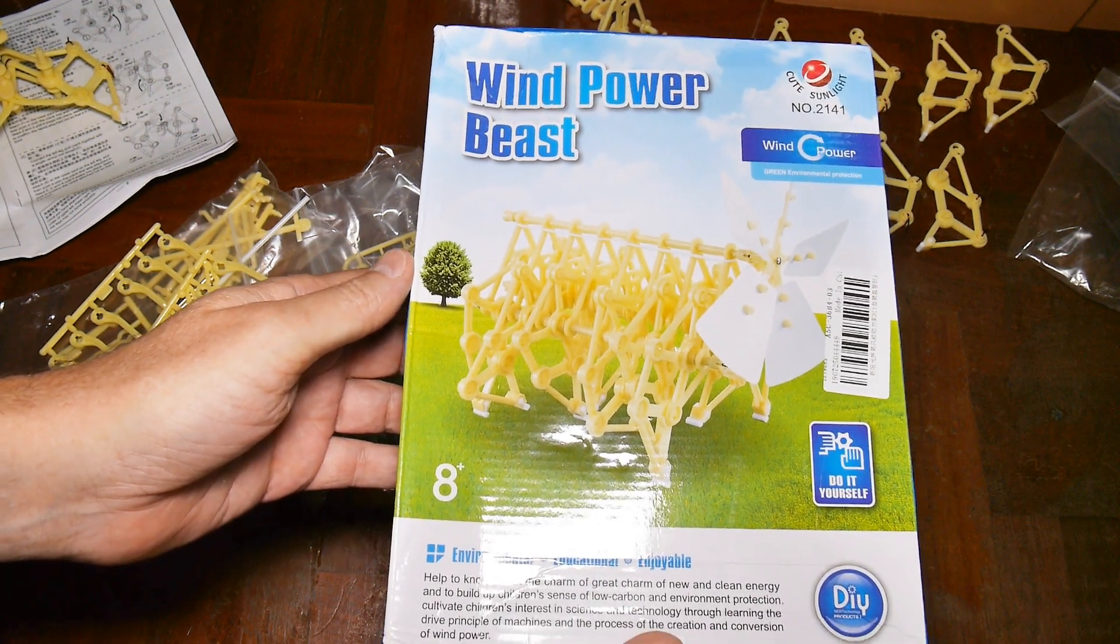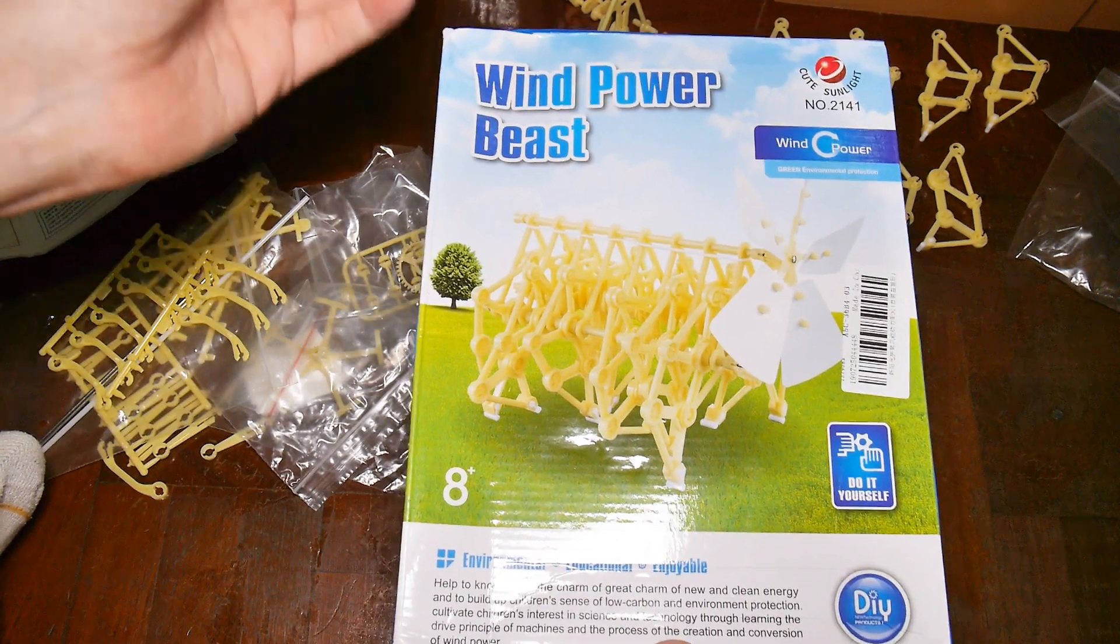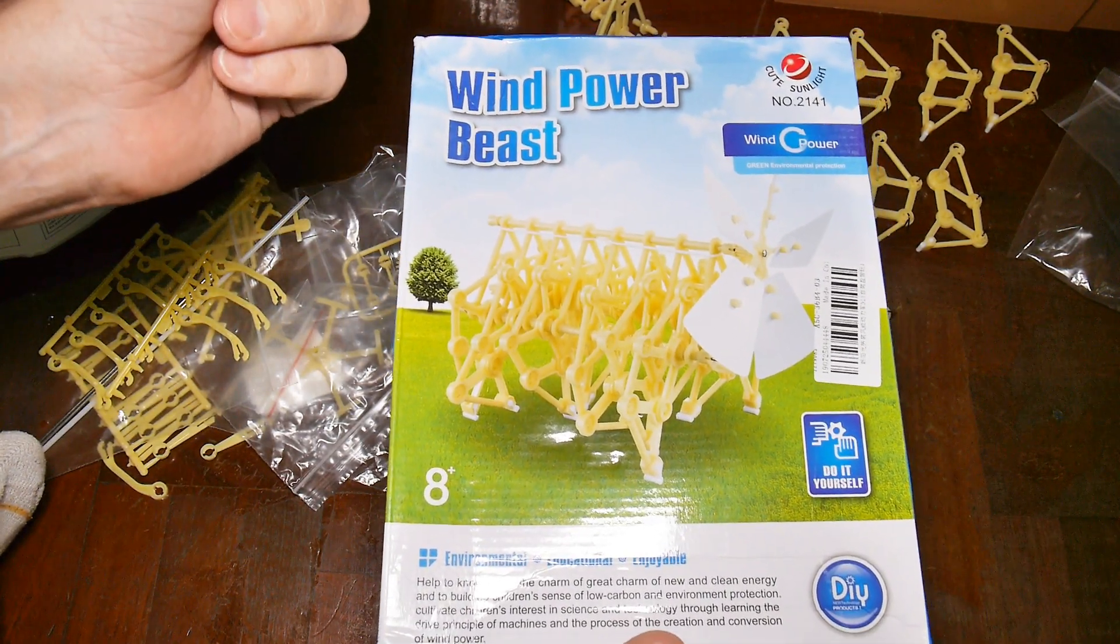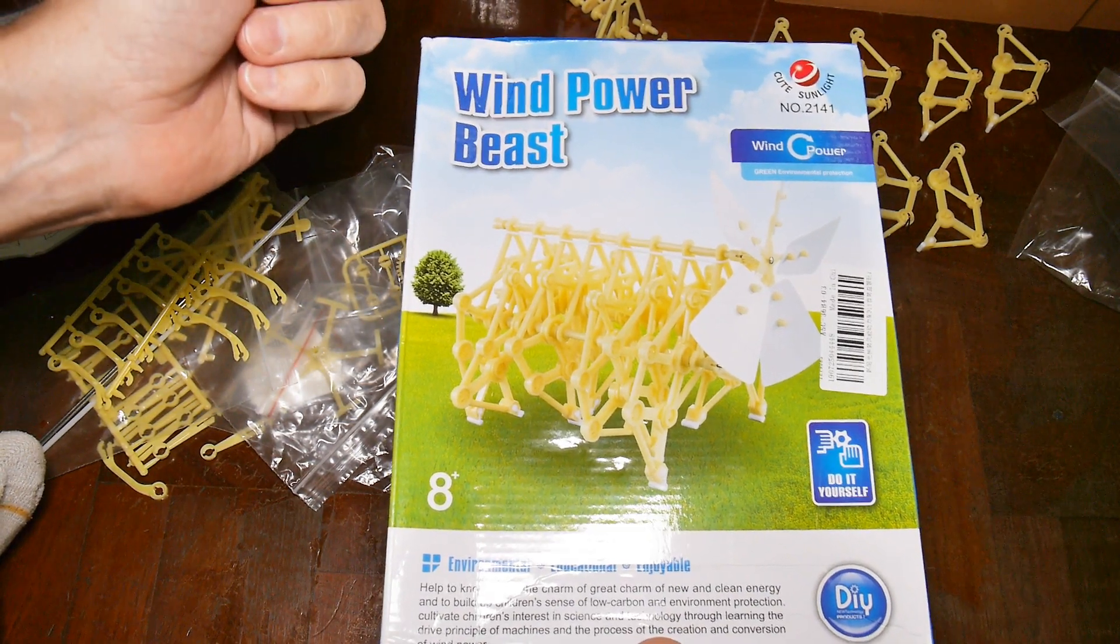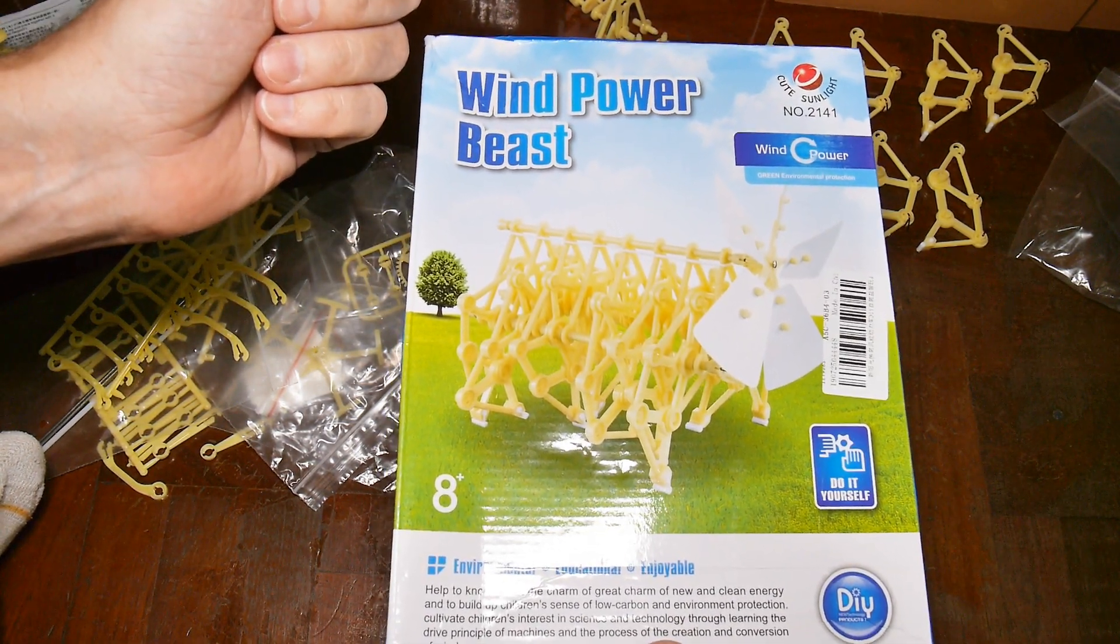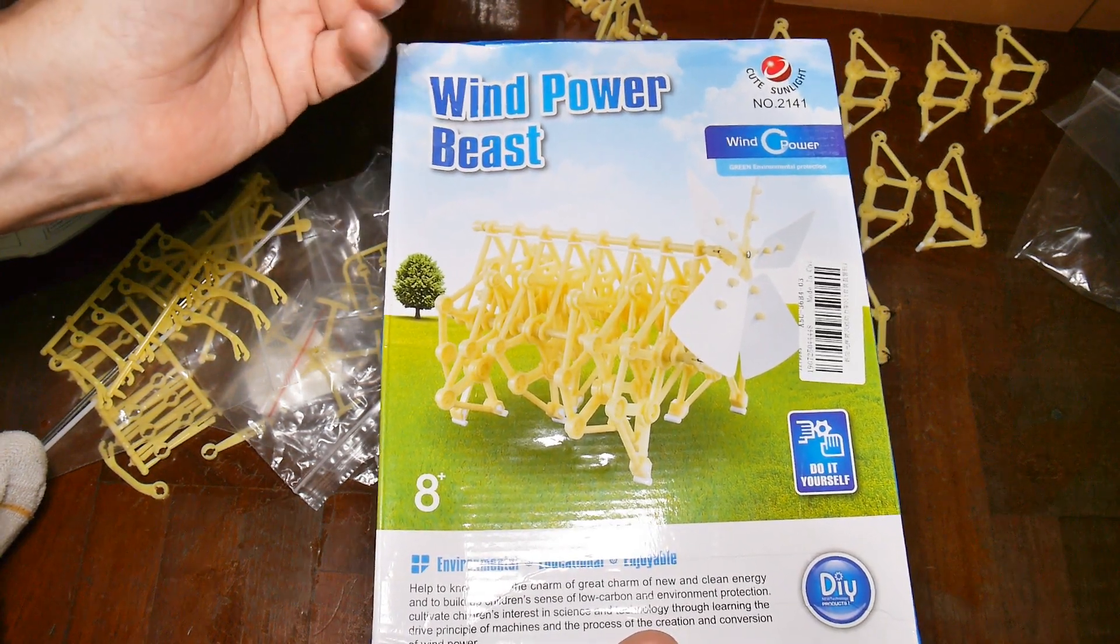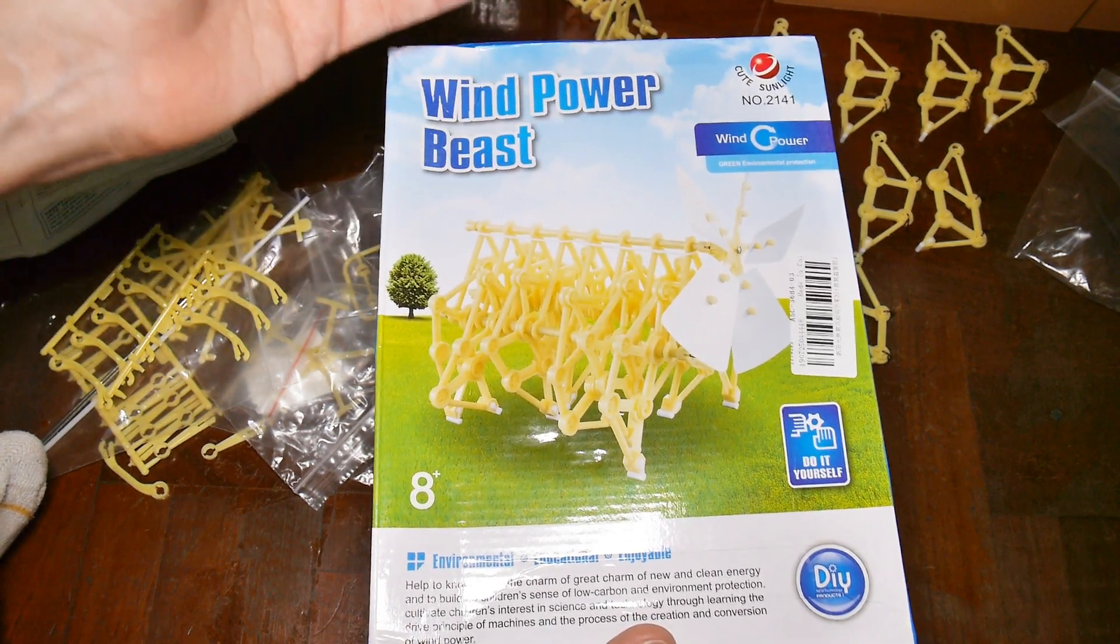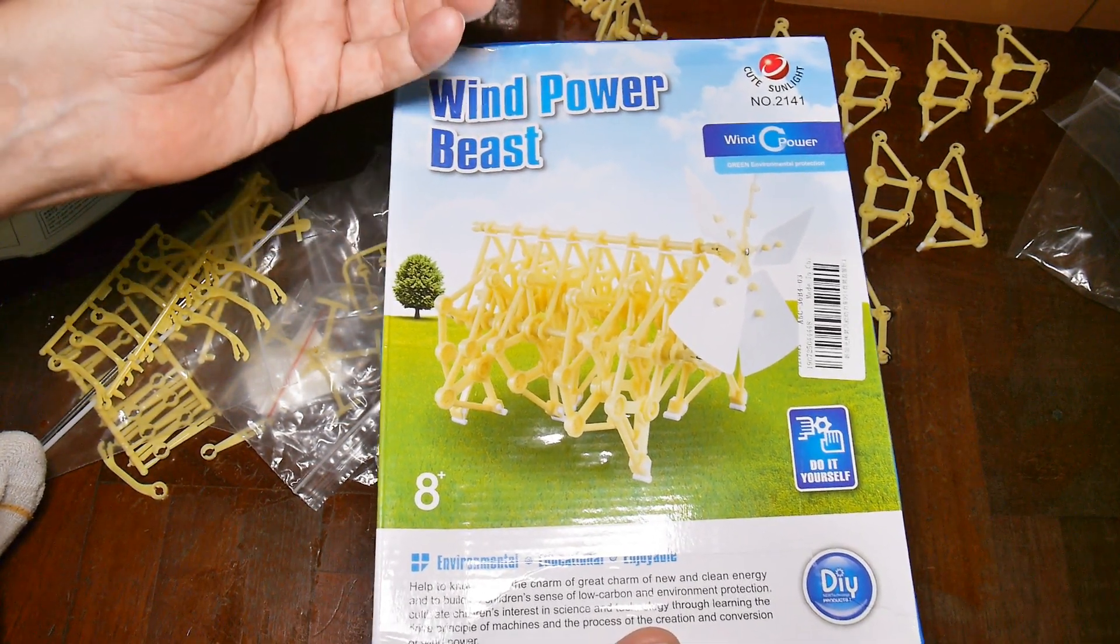Perhaps you've seen one of Theo Jansen's large creations. He calls them Strandbeasts. They're these wind-powered creations made from plastic tubes. That doesn't sound like very much, but they really are beautiful things to watch. They are powered along by the wind and he usually puts them out on a beach where there's a lot of air movement and these things walk along by themselves.